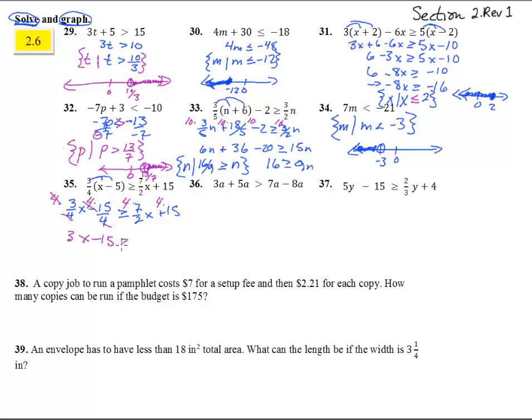And then we'll get something over there. 3x minus 15, greater than or equal to 14x. Watch that guy. It's a 14 plus 60. Subtract 3x over here, and we get 11x plus 60. Less than or equal to negative 15. Subtract 60 from both sides, and we get negative 75. Greater than or equal to 11x. Then we can divide both sides by a positive 11, and we get x is less than or equal to negative 75 over 11.